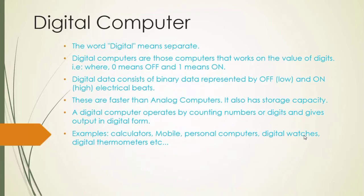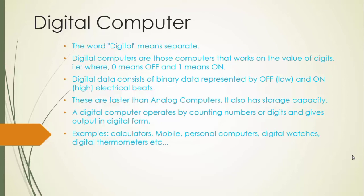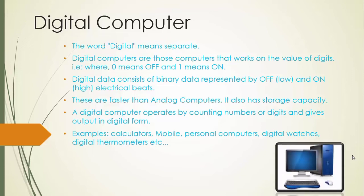Digital computer: The word 'digital' means separate. Digital computers work on digit values where zero means off and one means on. Digital data consists of binary data represented by off (low) and on (high) electrical bits. Digital computers are faster than analog computers and have storage capacity. They operate by counting numbers and give output in digital form. Examples include calculators, mobile phones, personal computers, digital watches, and digital thermometers.